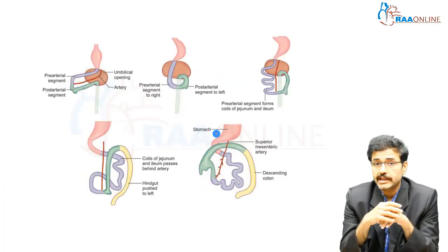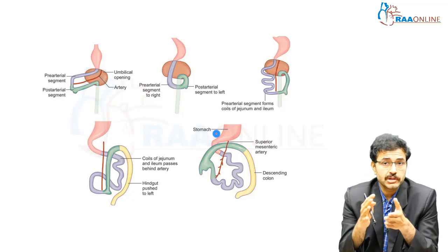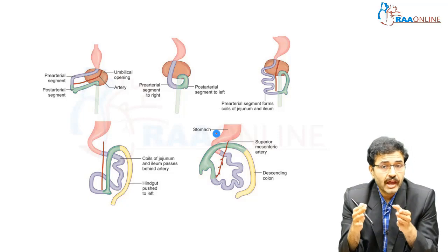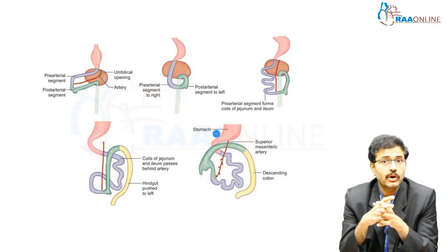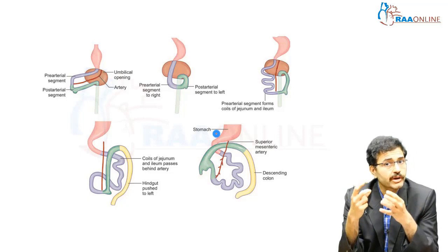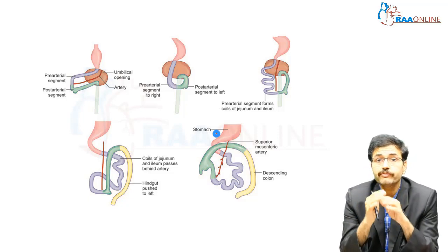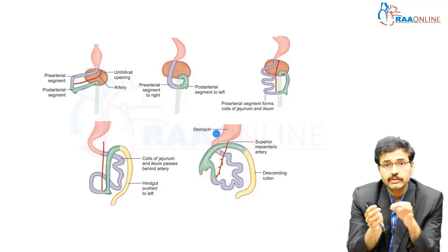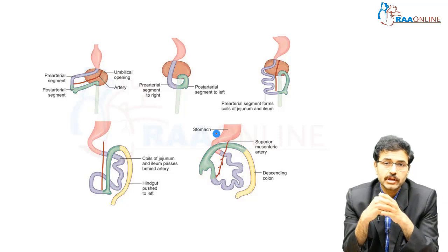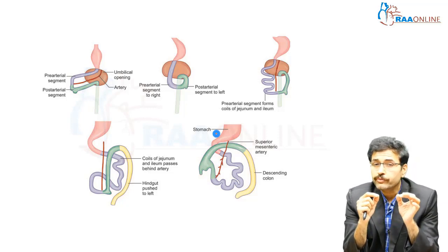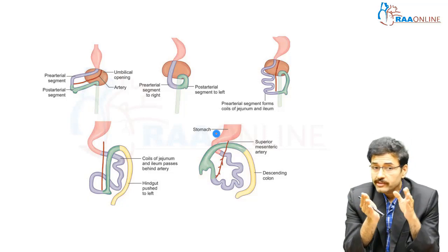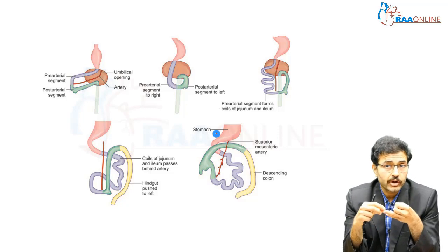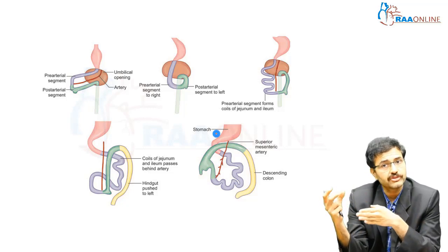The developing midgut subsequently undergoes elongation, rotation, and fixation. It is important to remember that elongation of the midgut is not possible within the developing embryo because of space constraints — the peritoneal cavity of the developing embryo does not have enough space. So there exists a process of physiological herniation: the midgut herniates through the umbilicus into the extra-embryonic coelom. This herniation occurs around the fourth to sixth week of gestation, after which it undergoes rotation and elongation, then returns back followed by fixation.